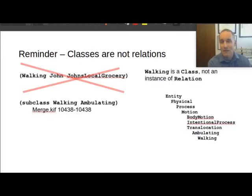And so here is a look at the hierarchy. So you can see that walking is down the bottom. Ultimately it's a process. Well ultimately it's an entity, but in particular it's a process. We say that we define this by saying walking is an ambulating, elsewhere we define that ambulating is a translocation and a motion and a process. And this is defined in the merge.kif file that's in the GitHub repository, in case you're curious about where to look for it.